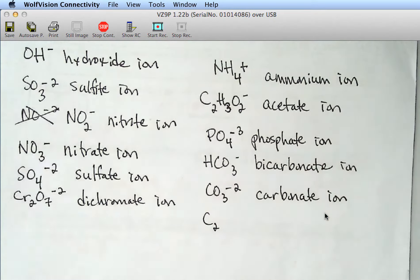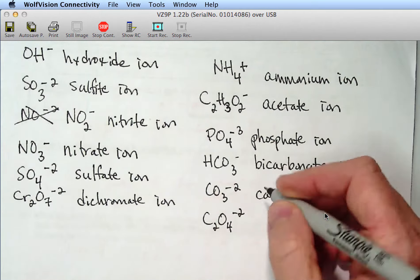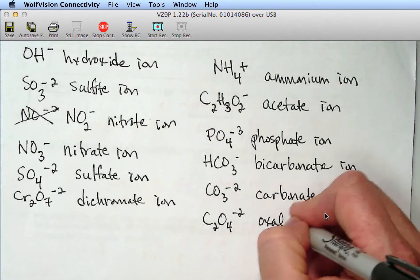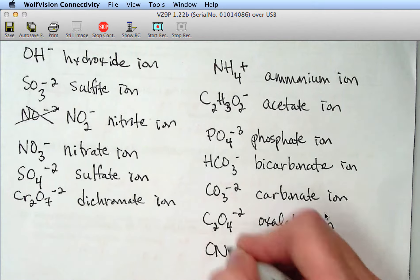While we're on bicarbonate, what about carbonate? So, CO3 minus two. And I heard oxalate over here. And what was the other one? Cyanide. So, C2O4 minus two, oxalate ion, and then cyanide.